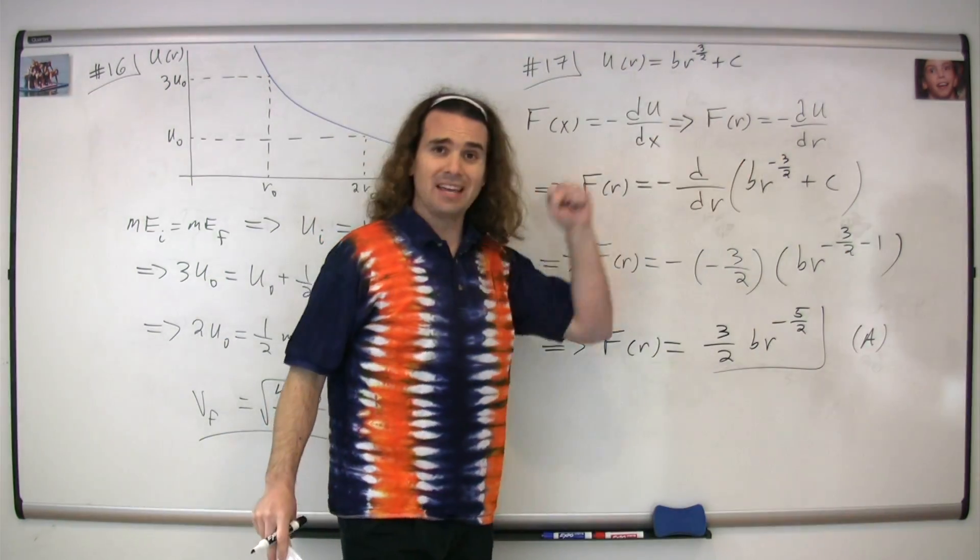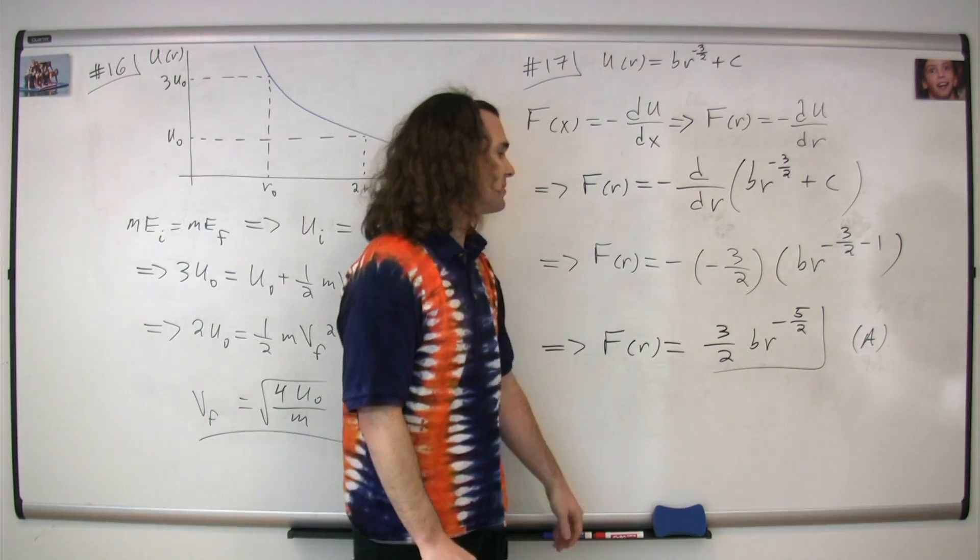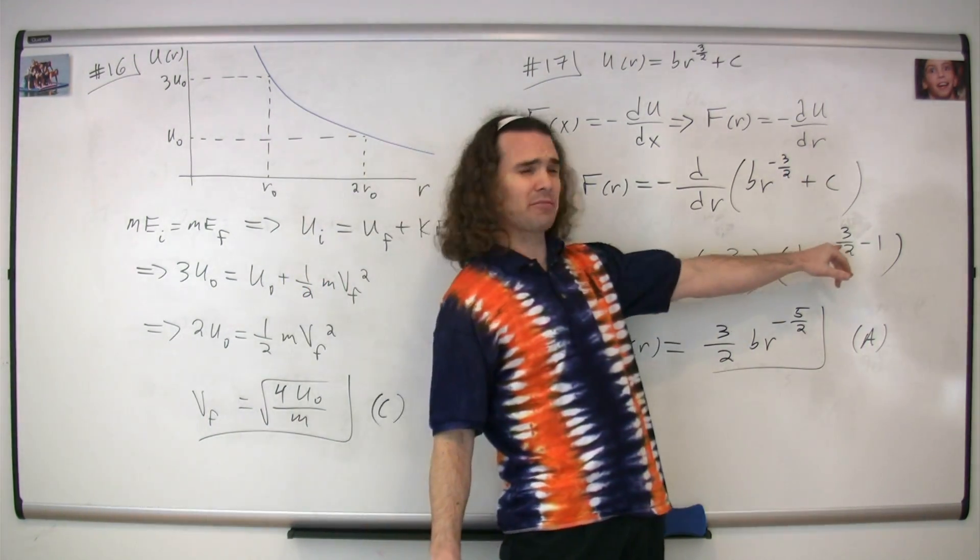So, taking the derivative of our function, we multiply by our negative 3½, and then we subtract one from our exponent.